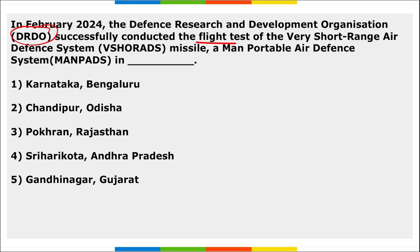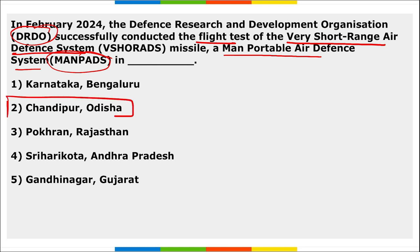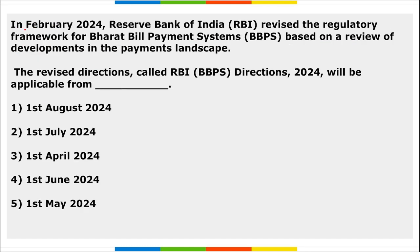Next: DRDO successfully conducted the flight test of a Very Short Range Air Defense System missile — a man-portable air defense system (MANPADS). Where was this conducted? It was in Chandipur, Odisha.